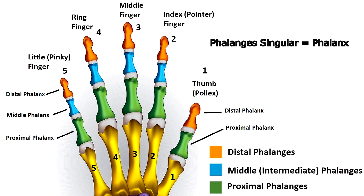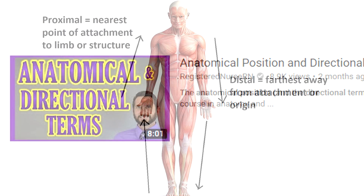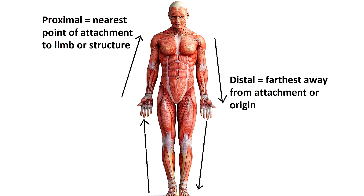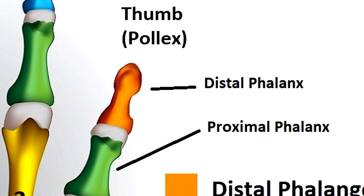The phalanges are named after directional terms. Distal means further away from the attachment point or origin of a structure, and proximal means it's closer to the attachment point or origin. If you make a pistol with your hand, you can remember the phrase: the pistol is distal to the upper arm. So the phalanx furthest away from the metacarpals is called distal, the one closest to the metacarpal is called proximal, and the one in the middle is called middle or intermediate.